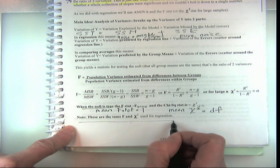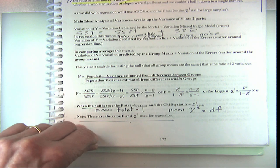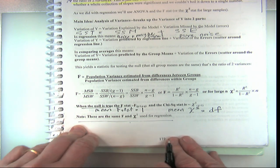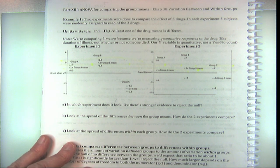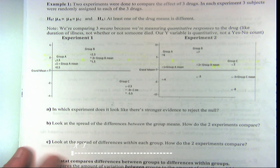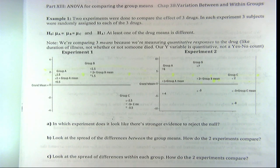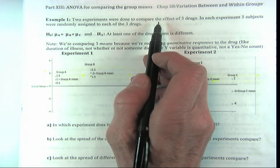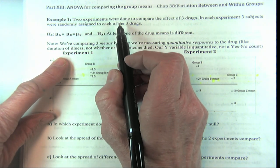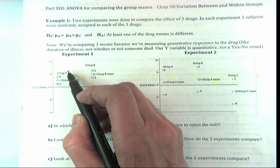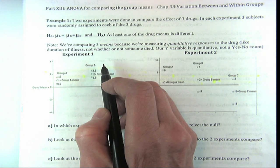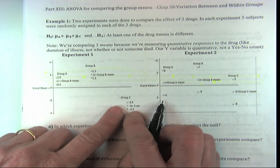These are exactly the same things we did before, but let's jump right into an example. Imagine that two experiments were done to compare the effect of three drugs. Drug A was given to group A, drug B to group B, and drug C to group C in both experiments. But they look different.